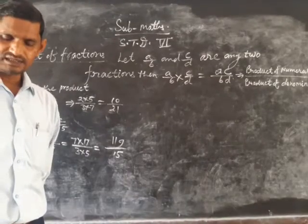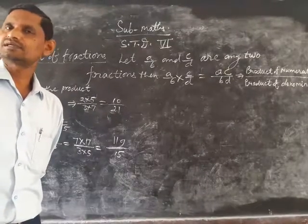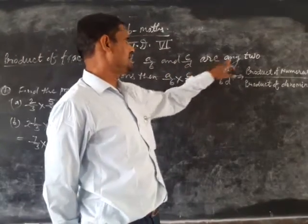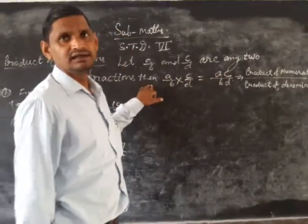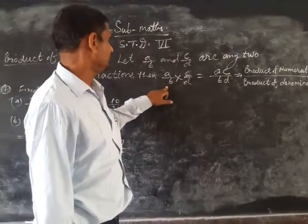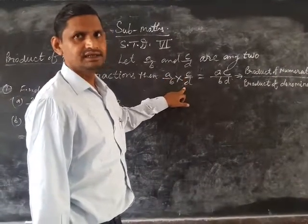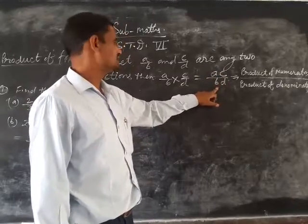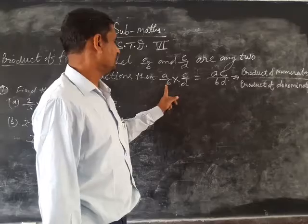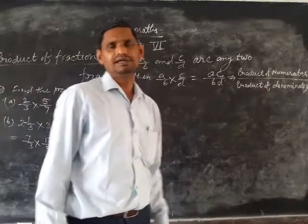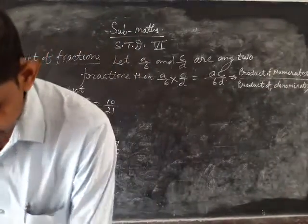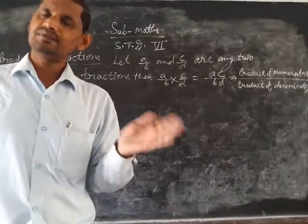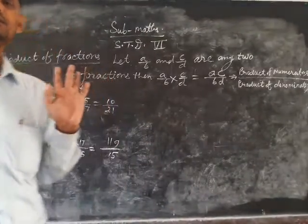Previous video I taught you addition and subtraction of fractions. Where A upon B and C upon D are any two fractions, then their product A upon B into C upon D is defined by AC upon BD. This means product of numerators upon product of denominators. When two fractions are multiplied, the product of their numerators is upon the product of their denominators.